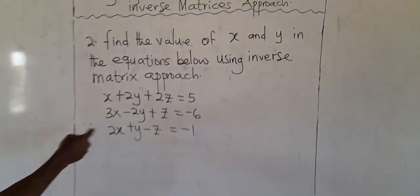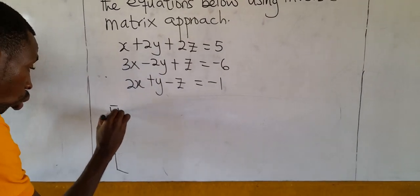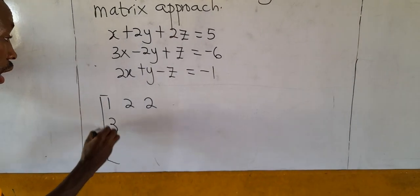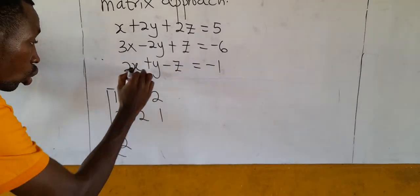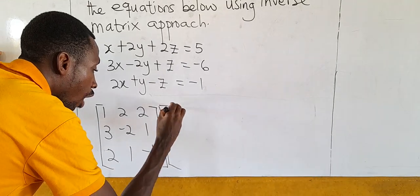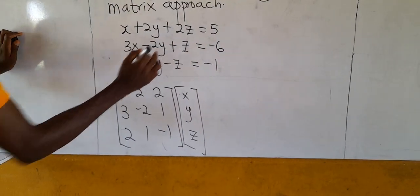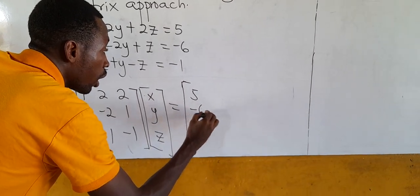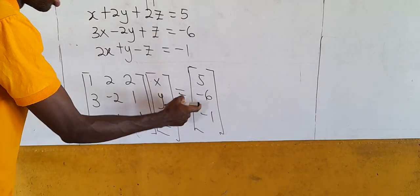Let's rewrite the 3-variable system in matrix form. The coefficient matrix is [1, 2, 2; 3, −2, 1; 2, 1, −1]. This times [x; y; z] equals the constant matrix [5; −6; −1]. So we let A be the 3×3 coefficient matrix, capital X = [x; y; z], and B = [5; −6; −1]. Our system becomes AX = B, and X = A⁻¹B.